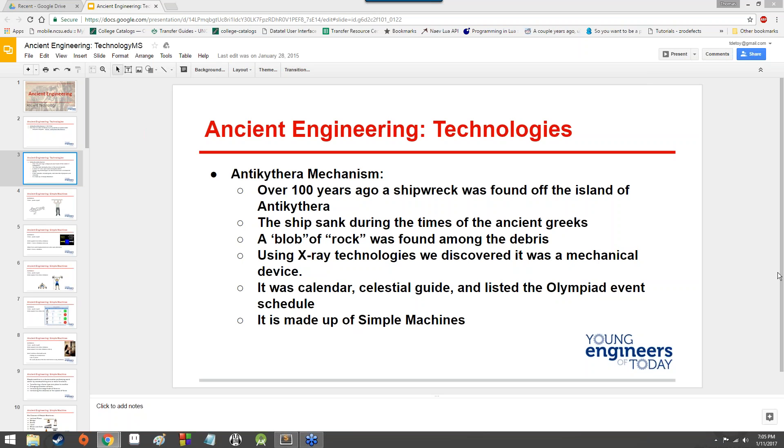It was rediscovered over 100 years ago in a shipwreck found off the island of Antikythera. Hence, Antikythera mechanism. The ship sank during the times of the ancient Greeks. There was this blob of rock found among the debris. Using X-ray technologies, we discovered that it was a mechanical device. It was a calendar, a celestial guide, and it listed the Olympiad event schedule. It's all made up of simple machines.